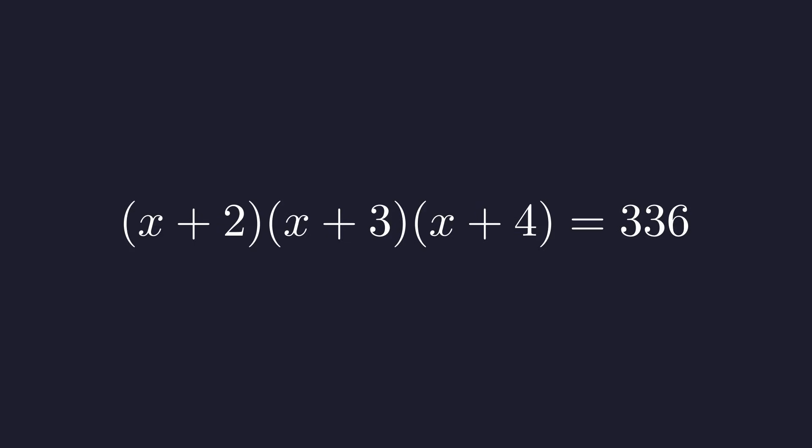There has to be a better way. Let's go back to the original problem and see if we can find some kind of pattern or symmetry. If you look at the terms x plus 2, x plus 3, and x plus 4, you might notice they're symmetric around the middle one. This central term, x plus 3, is going to be the key.